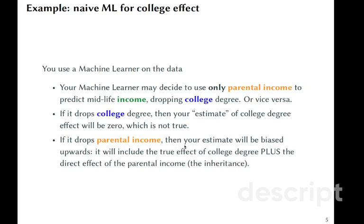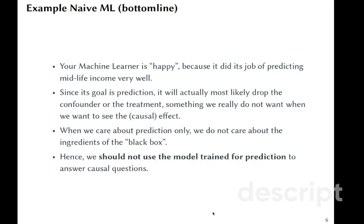If it drops parental income, then your estimate will be biased upwards, assuming that the effect of parental income on college is positive. It will include the true effect of college degree plus the direct effect of the parental income, the inheritance.